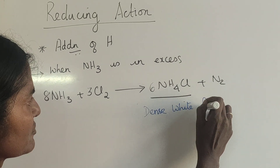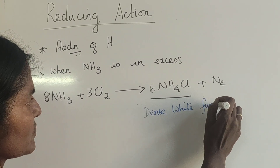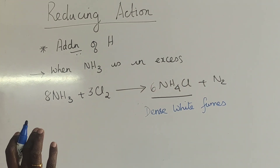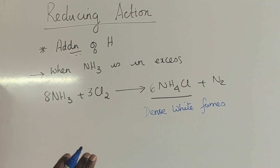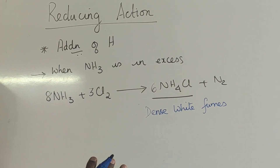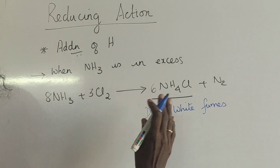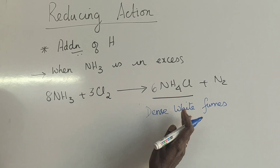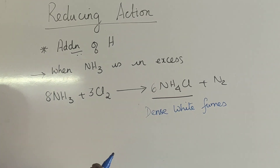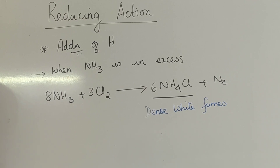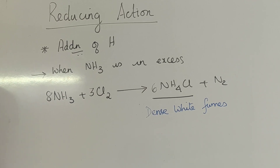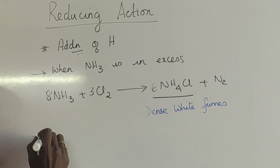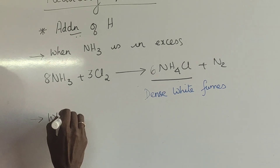You can see dense white fumes, just like we see dense white fumes when hydrogen chloride and ammonia are brought together, because that also gives ammonium chloride. Here also we have dense white fumes. The next reaction is when chlorine is in excess.